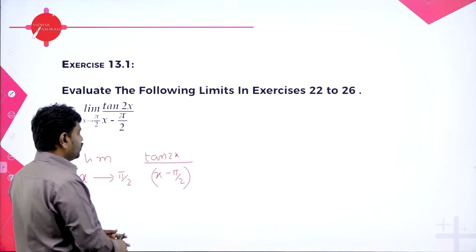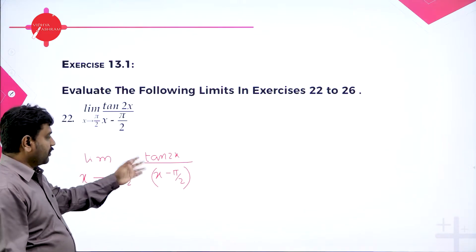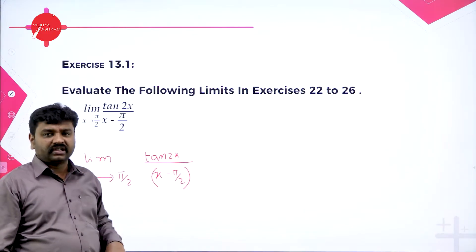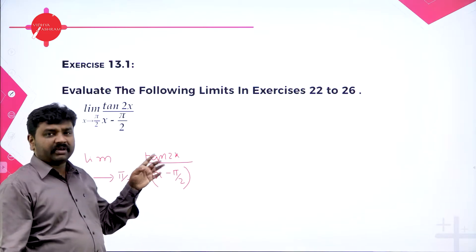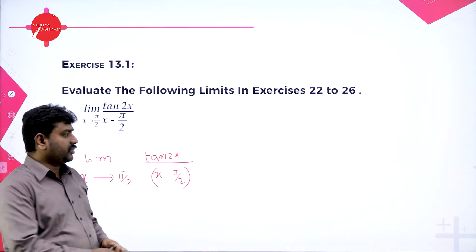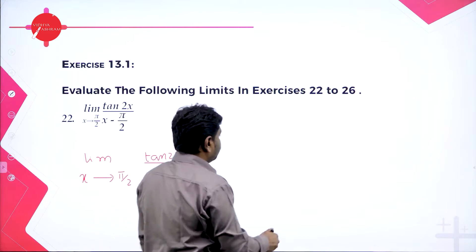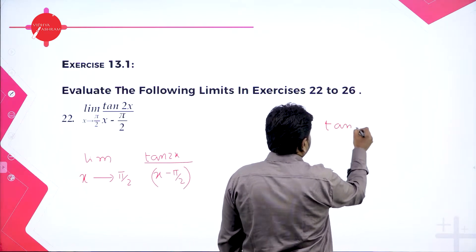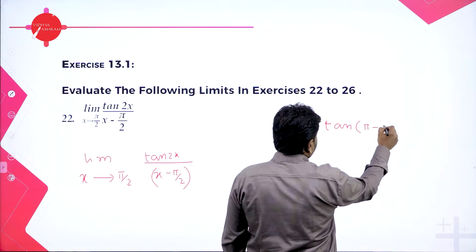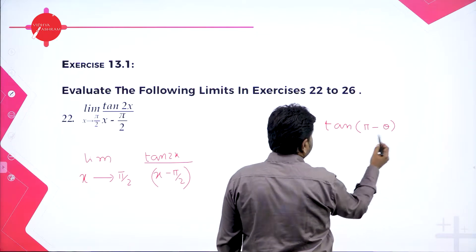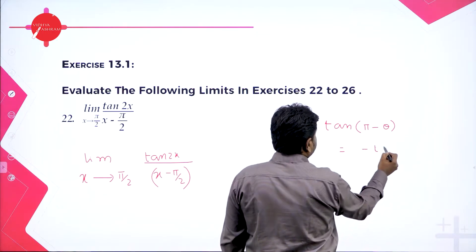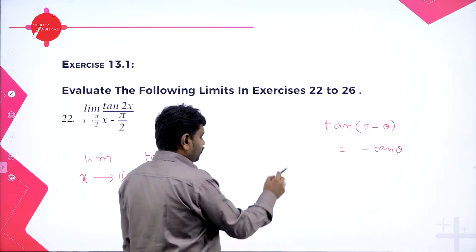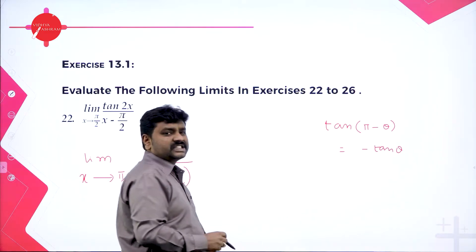We can write this using the allied angle format. If you know, tan(90° − θ) gives cot θ, and tan(180° − θ) gives minus tan θ. For 180°, the function does not change, and 180° − θ lies in the second quadrant. So tan(π − θ) = −tan θ.